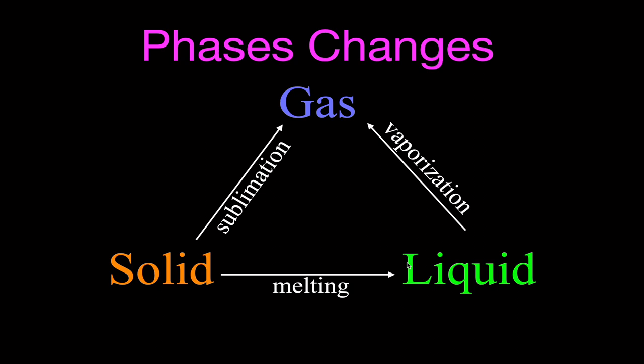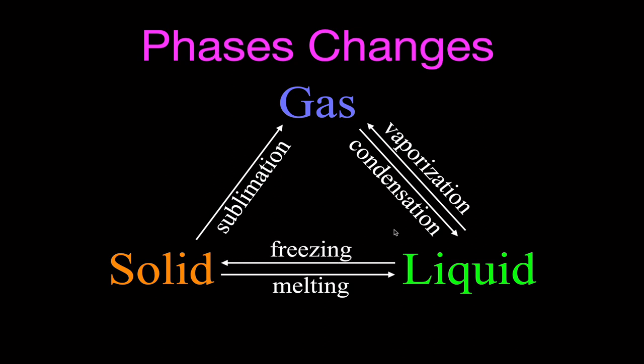Going the other direction: from gas to liquid is called condensation — like liquid gathering on the outside of a cold glass, which is water vapor from the air condensing. Going from liquid to solid is called freezing. You can also go right from a gas to a solid — that's how solid CO2 is made from a gas — and that is called deposition. So there are six phase changes in total.